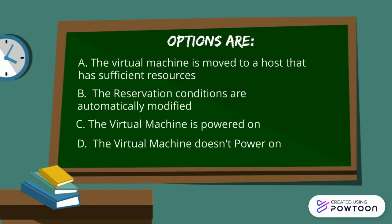So let's review the options again. Option A: The virtual machine is moved to a host that has sufficient resources — that's not possible. A virtual machine cannot be migrated if the reservation conditions are not met. Option B: The reservation conditions are automatically modified — that is also a wrong answer. The reservation conditions will never be modified automatically.